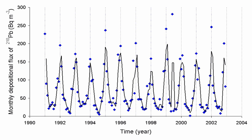It occurs naturally in minute quantities as an intermediate step in the normal radioactive decay chains through which thorium and uranium slowly decay into lead and various other short-lived radioactive elements. Radon itself is the immediate decay product of radium. Its most stable isotope, 222Rn, has a half-life of only 3.8 days, making radon one of the rarest elements since it decays away so quickly.